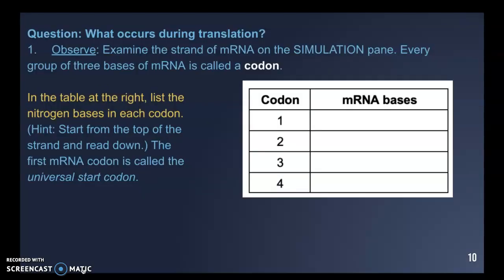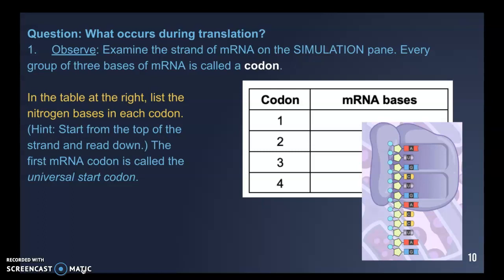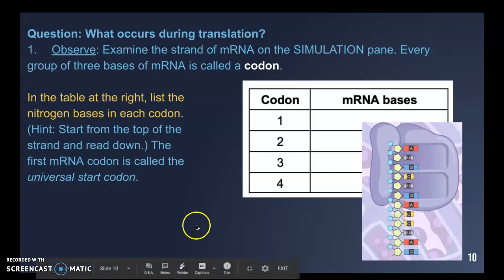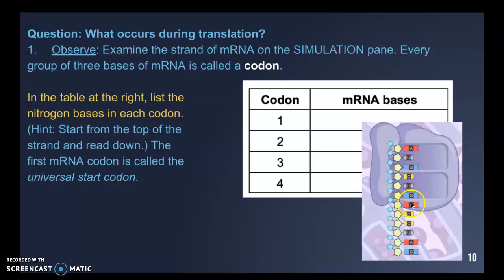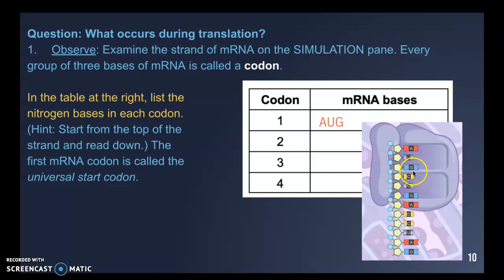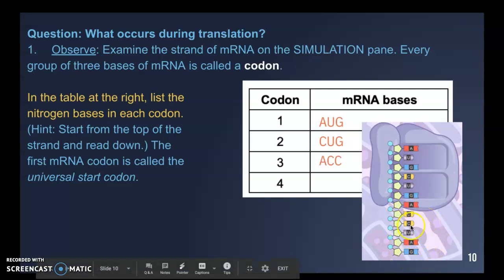In part one, examine the strand of mRNA on the simulation panel. Every group of three bases on mRNA is called a codon. Here is the mRNA strand lined up outside the nucleus in the cytoplasm, attached to the ribosome. The ribosome reads the bases in groups of three: the first codon is AUG, the next is C-U-G, then A-C-C, and finally U-A-G.